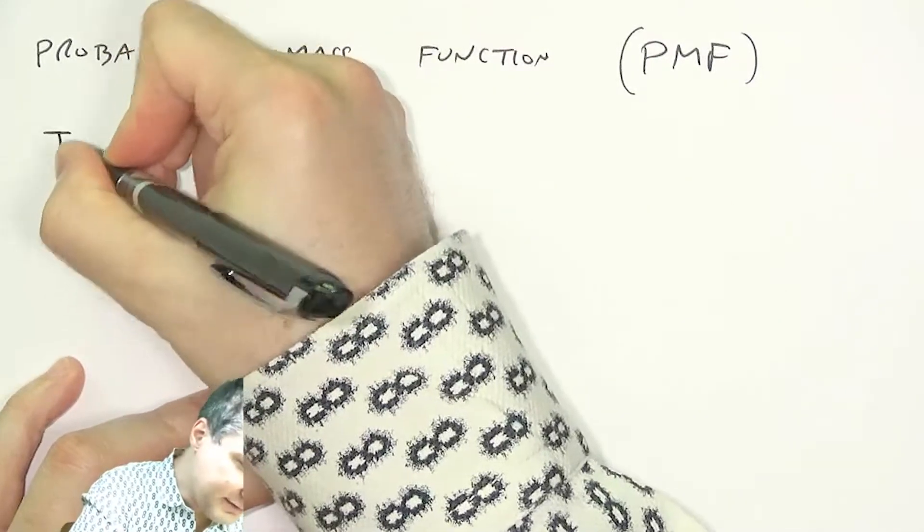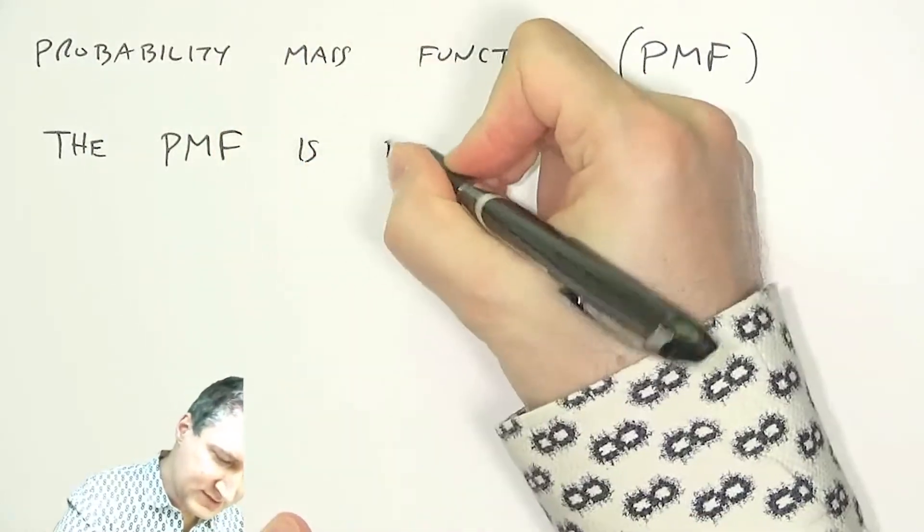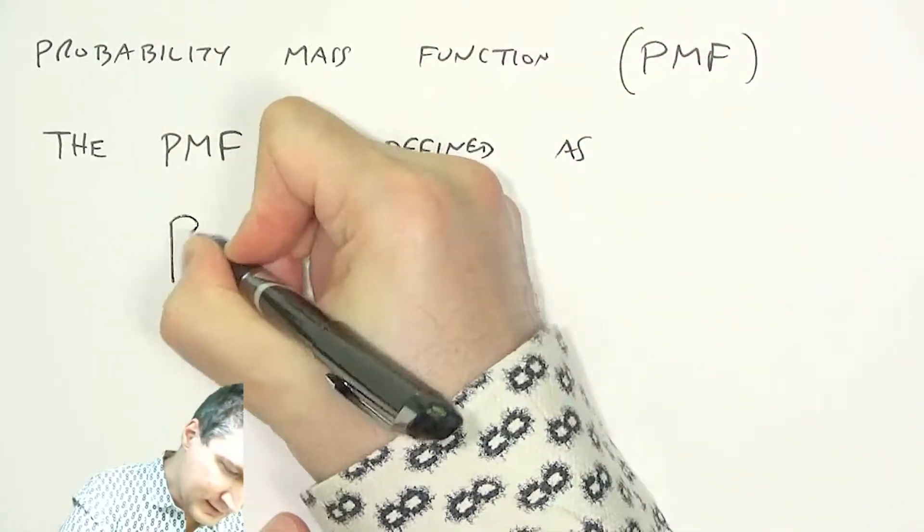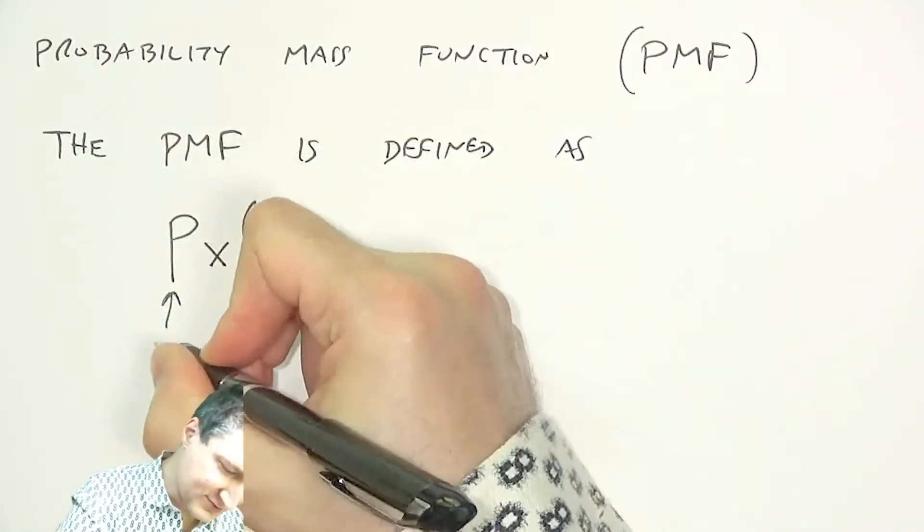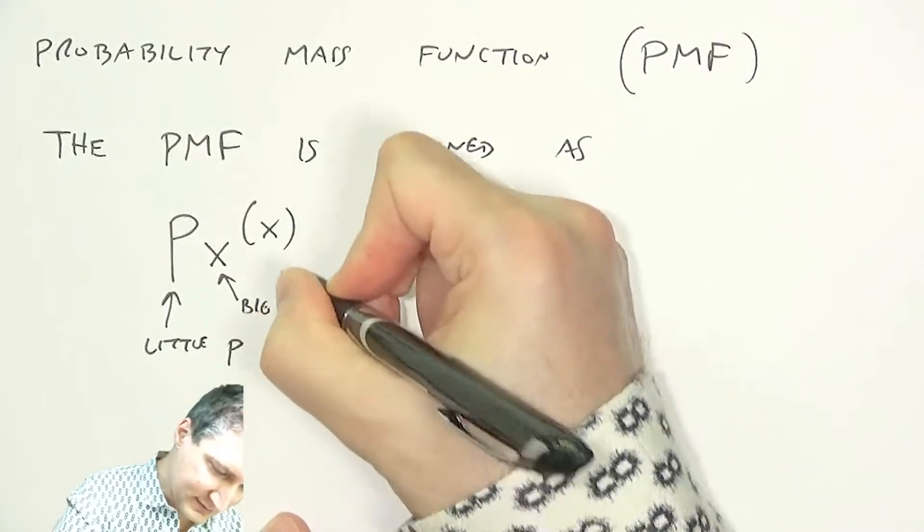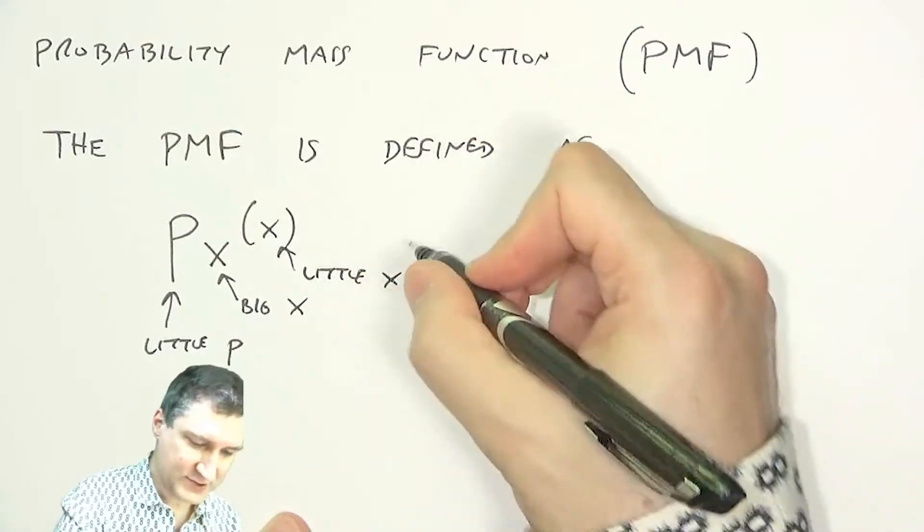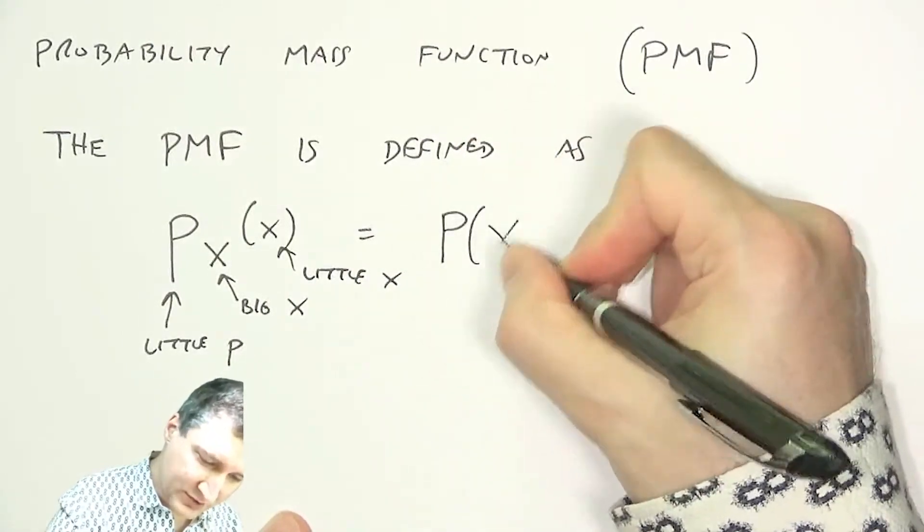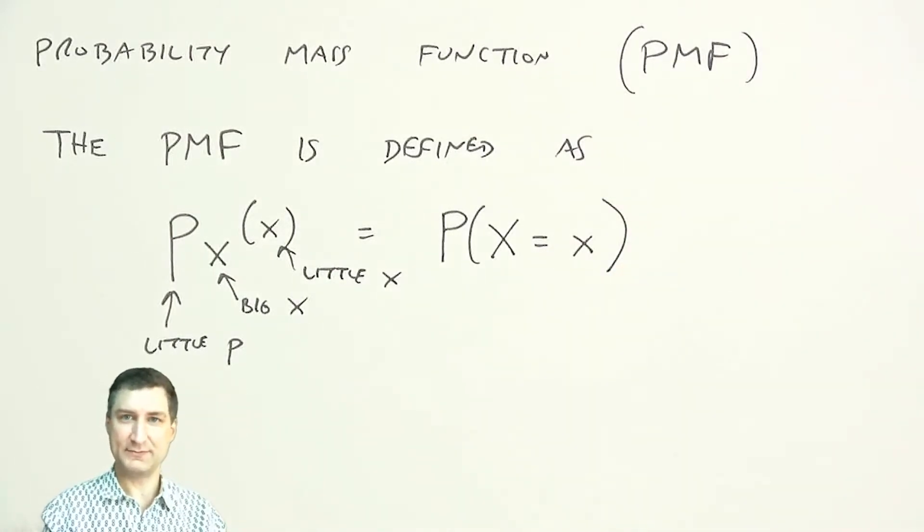So the PMF is defined as the following. This is little p, big X, little x. So this is basically a shorthand for saying, what is the probability that the discrete random variable has the outcome, little x.